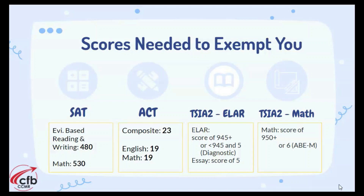When it comes to getting that college-ready score on the TSI A2, the English section requires a score of at least 945 and an essay score of 5 or above. If you don't get the 945, there is a diagnostic section you'll be sent to where you have a second chance. For math, you need at least a 950. If you don't get the 950, you'll go to a diagnostic where you need to score at least a 6 or above to achieve college readiness.